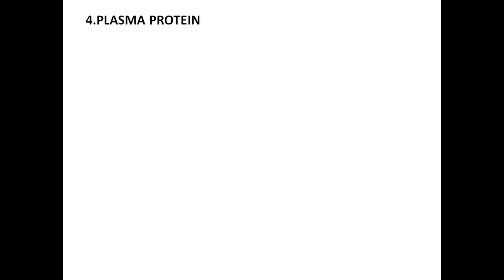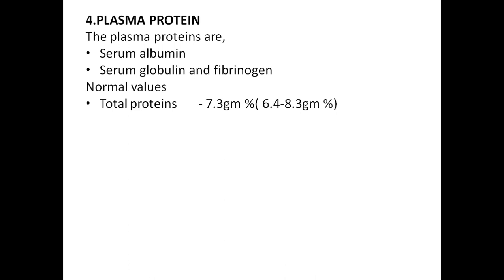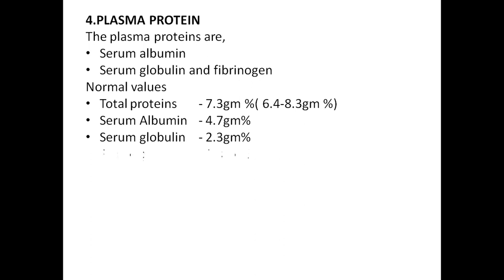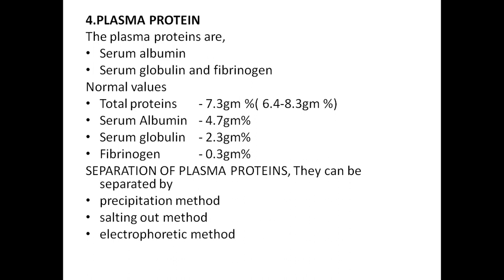The fourth question is plasma proteins. Plasma proteins are serum albumin, serum globulin, and fibrinogen. Normal values: total protein is 7.3 gram percent, ranging between 6.4 to 8.3 gram percent. Of this, serum albumin is 4.7, serum globulin is 2.7, and fibrinogen is 0.3 milligram percent. Plasma proteins can be separated by precipitation method, salting out method, electrophoretic method, and ultracentrifugation method.